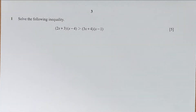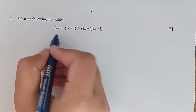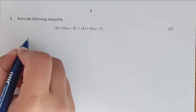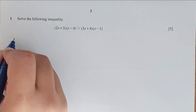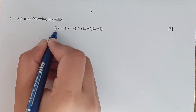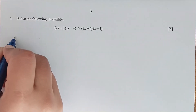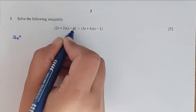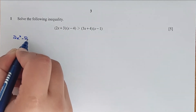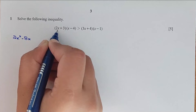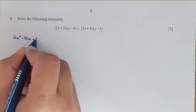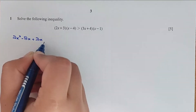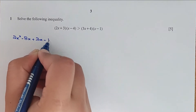Question number 1: solve the following inequality. First let me multiply the factors. Applying the distributive property we have 2x times x is 2x squared, and 2 times -4 is -8x, and 3 times x is 3x, and 3 times -4 is -12.